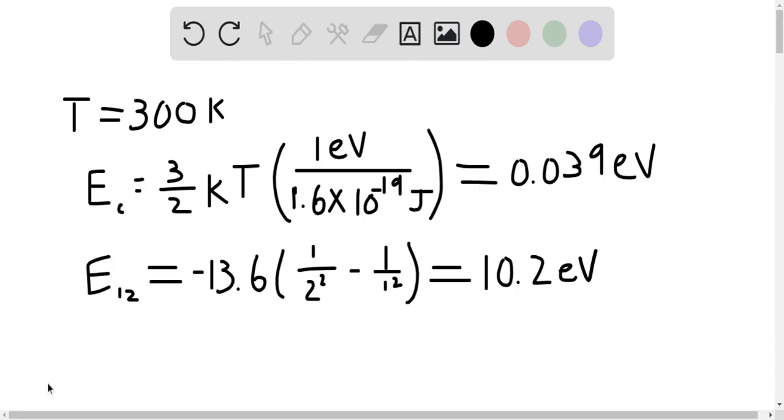From these calculations, it is apparent that the thermal energy is too small to excite the atom from n equals 1 to n equals 2.